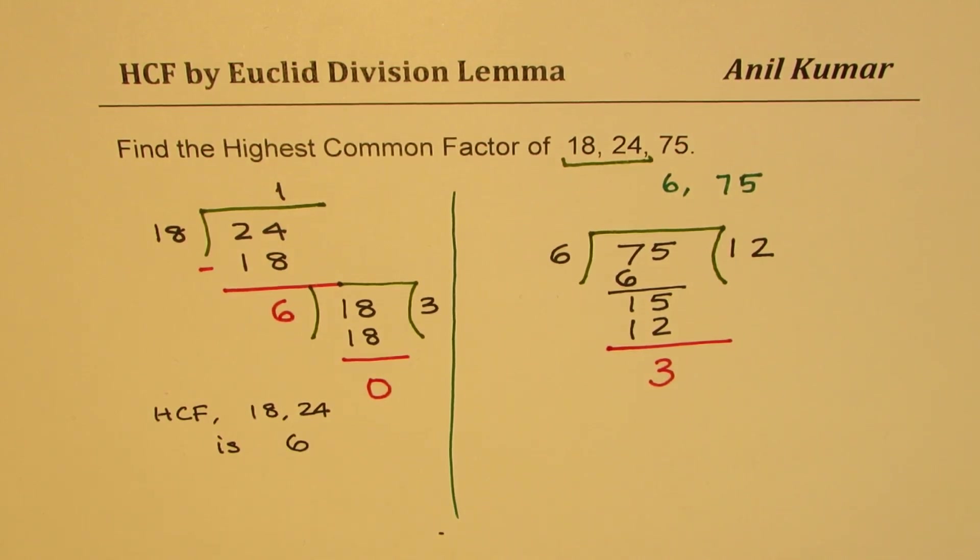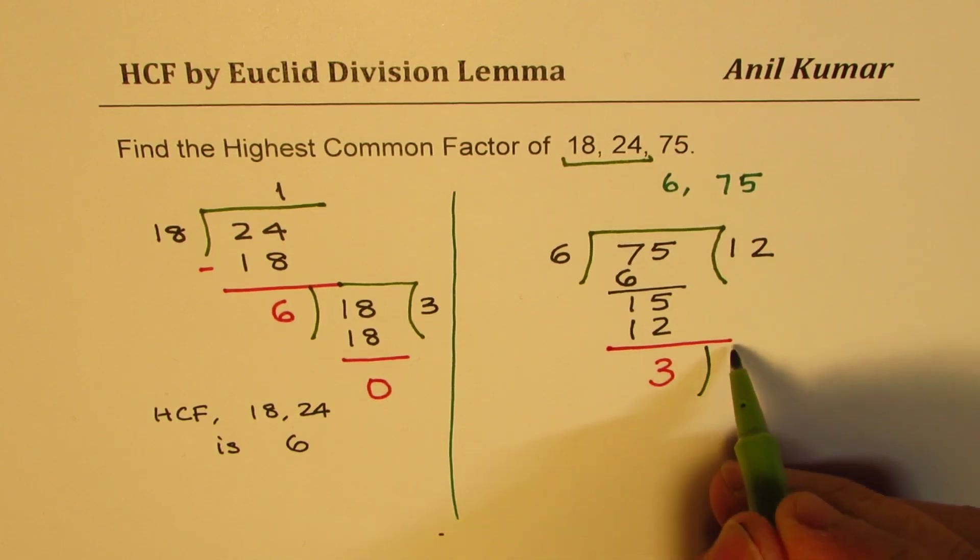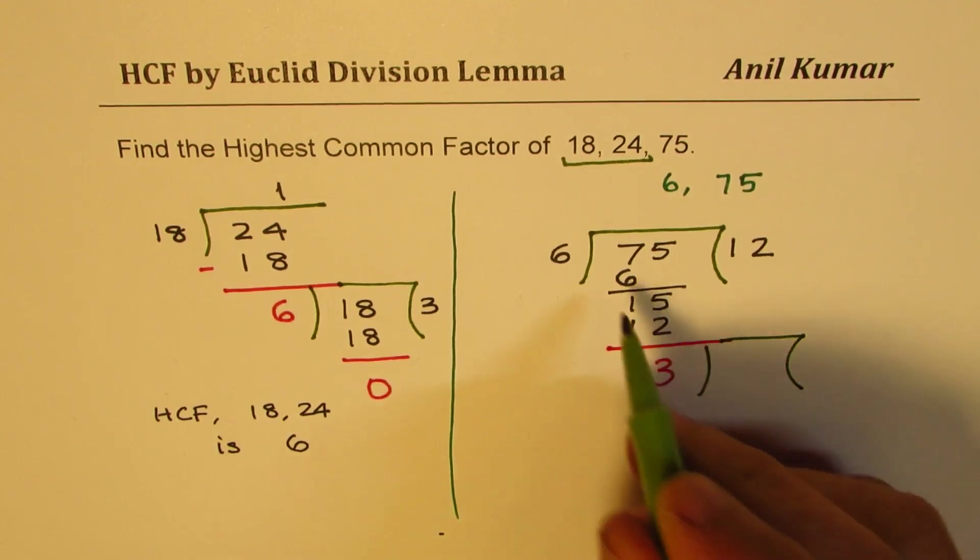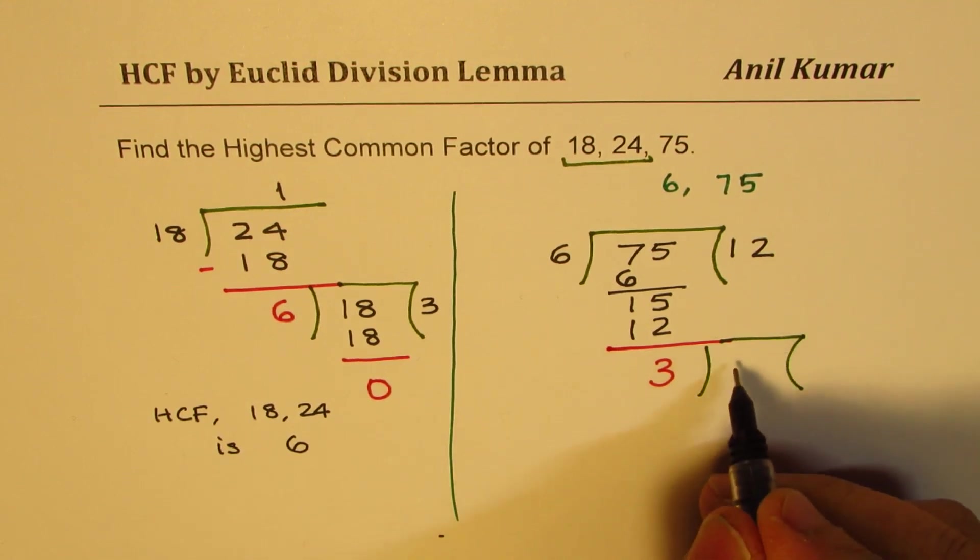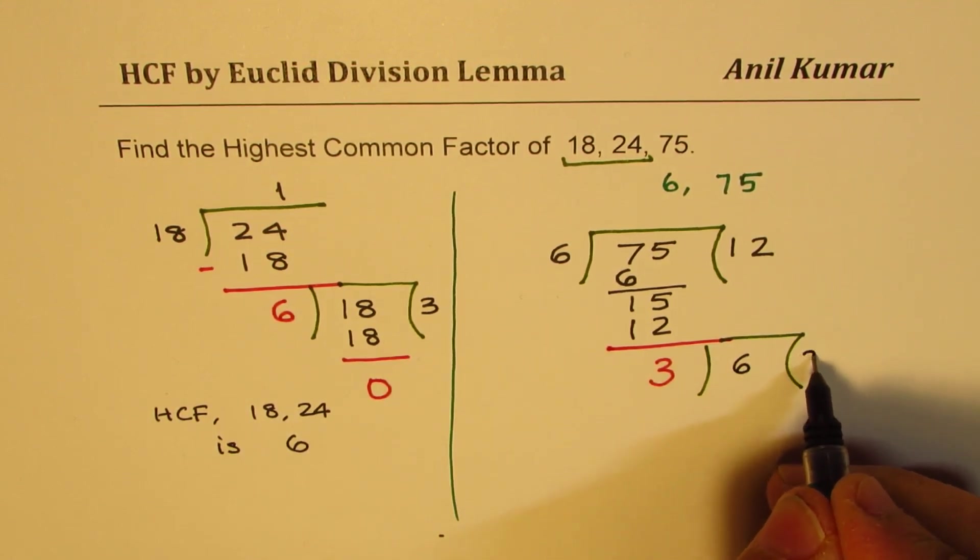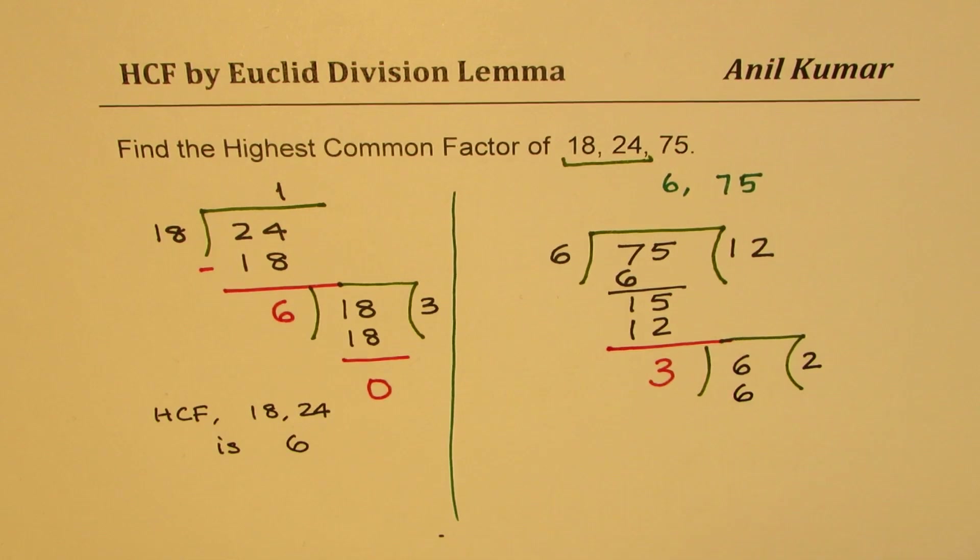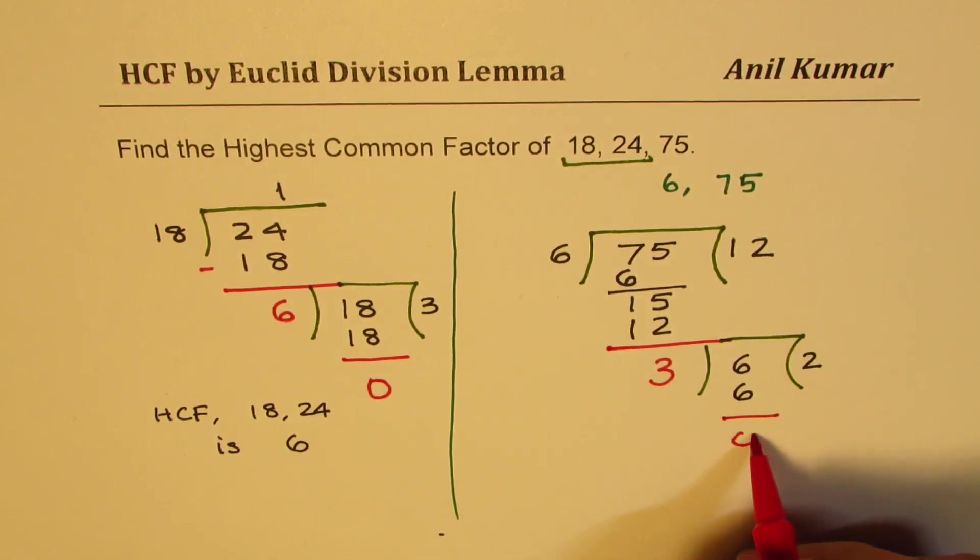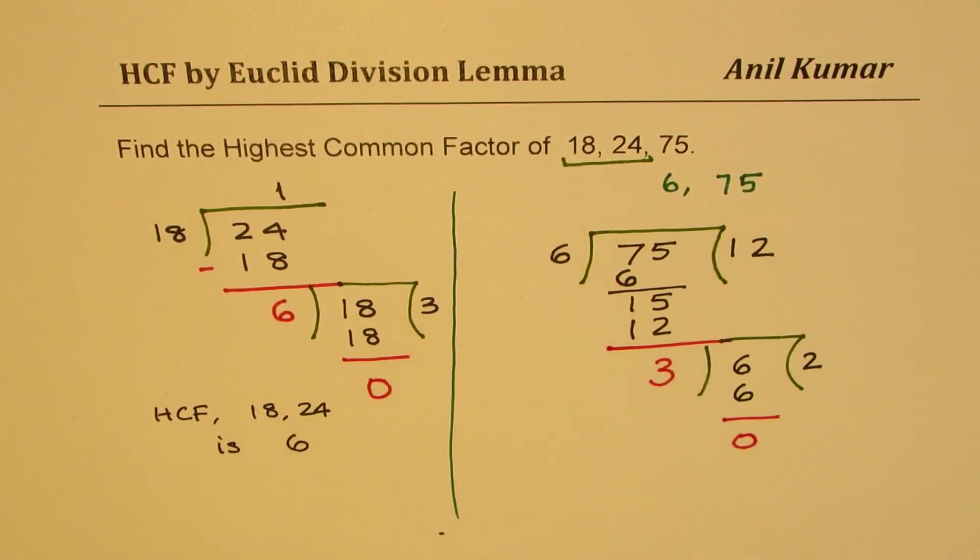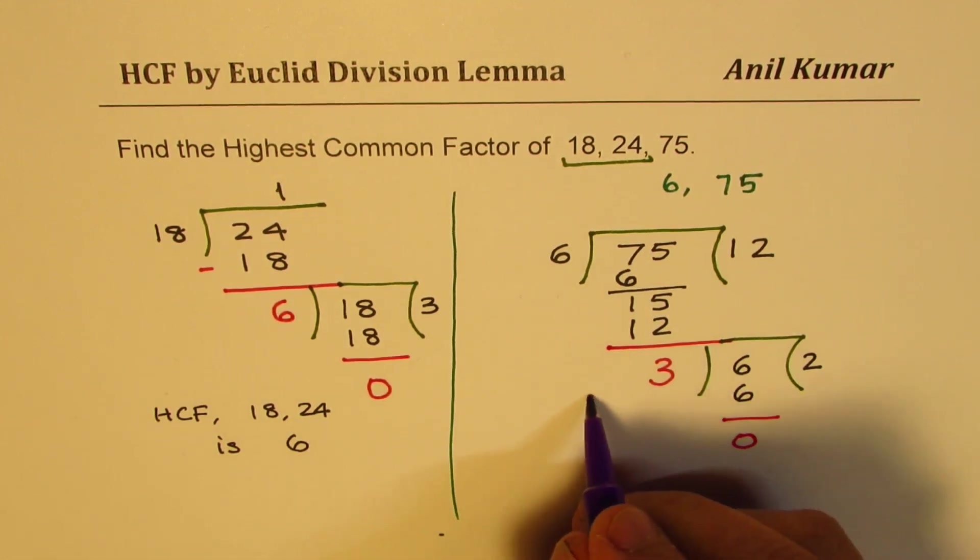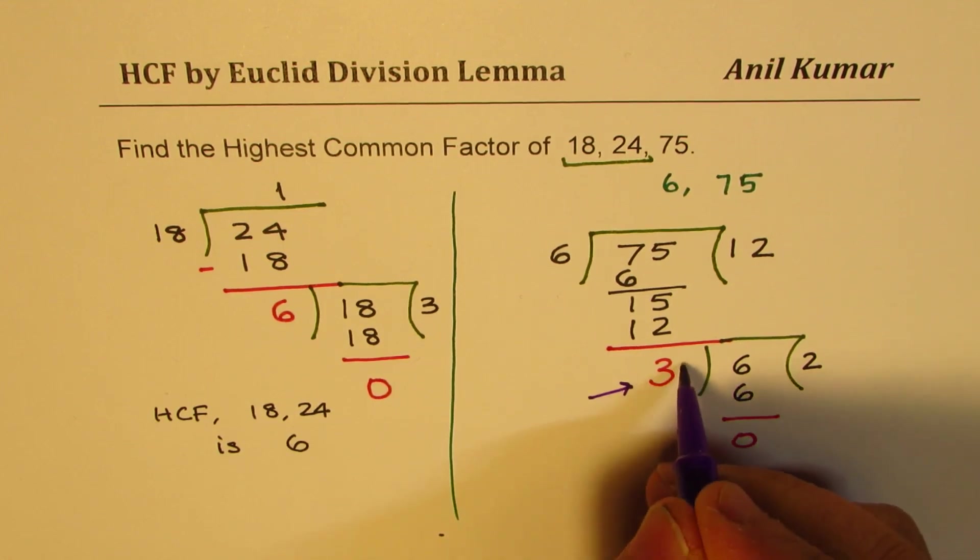So we'll continue with this process of division and now we're going to divide 6 by 3. So if I substitute 6 here, 3 times 2 is 6 and the remainder which we obtain now is 0. That means 3 is a factor of 75 and 6 both. And therefore, we get our result, which is 3. So that becomes our answer.